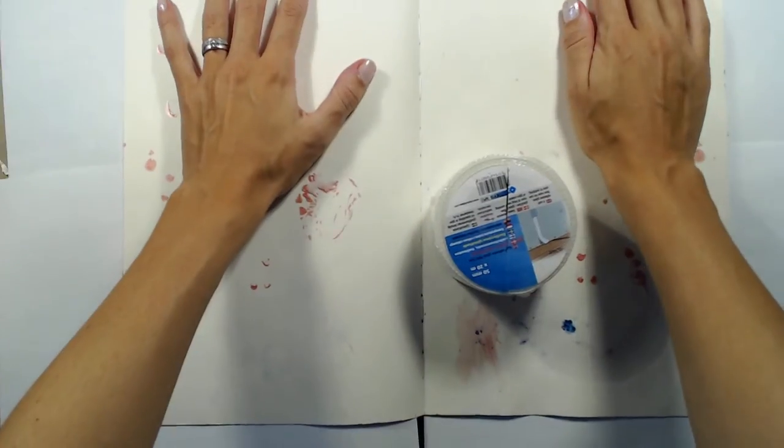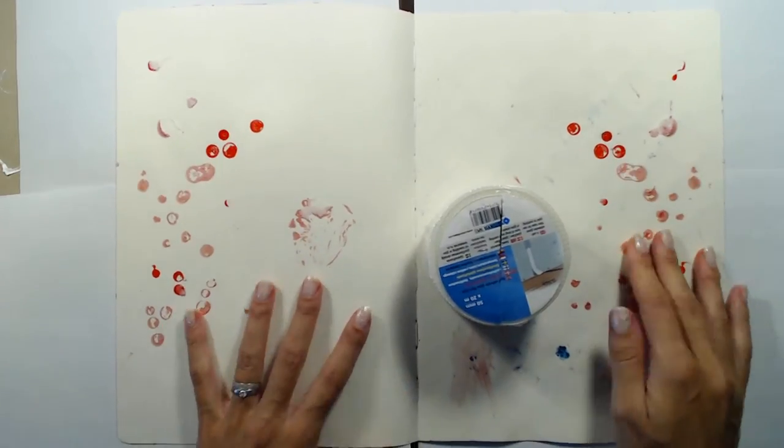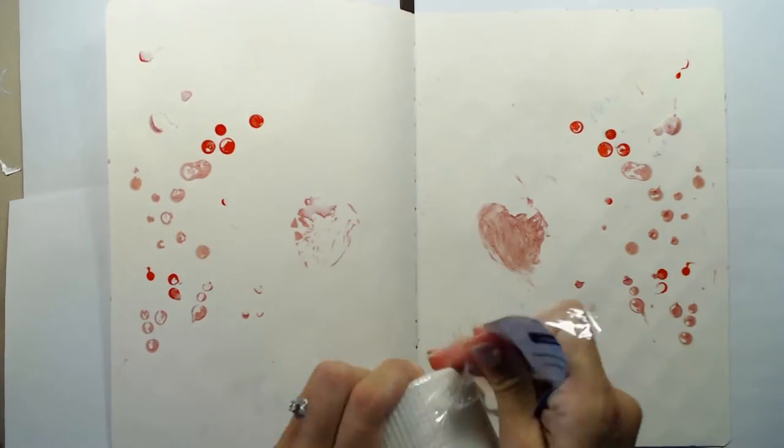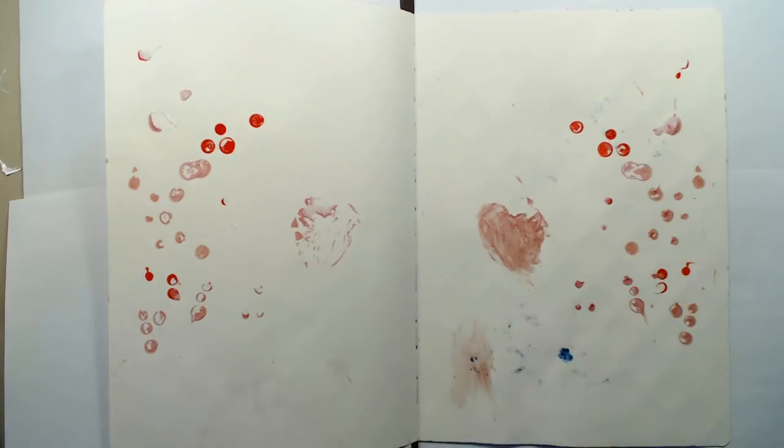Before I start, I am putting a few sheets of paper behind my spread to protect the other pages in the journal as much as possible. Usually I do get a lot of ink seepage and stuff like that anyway, but by using a few sheets of paper I can minimize it at least.